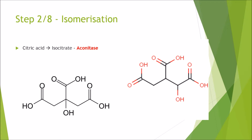Step 2 is isomerisation. Citric acid must first be isomerised into isocitrate, and that is catalyzed by aconitase. Comparing the two molecules, where the OH group is on citric acid, all we are doing is literally just shifting it along so it is now on this carbon here. That is the whole purpose of that step.